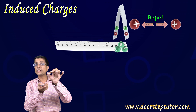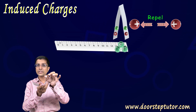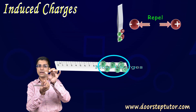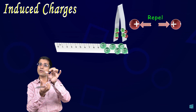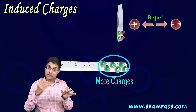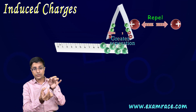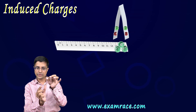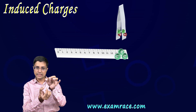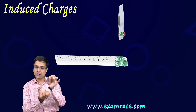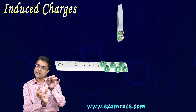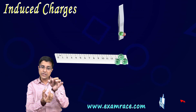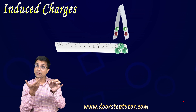This is happening because as I bring the negatively charged scale close, these two leaves at the very top become positively charged because of induction. These induced positive charges repel each other — both leaves become positively charged and since like charges repel, they move away from each other. The more the positive charge, the greater the repulsion. So I can measure how much charge is on these leaves by measuring the distance between them.